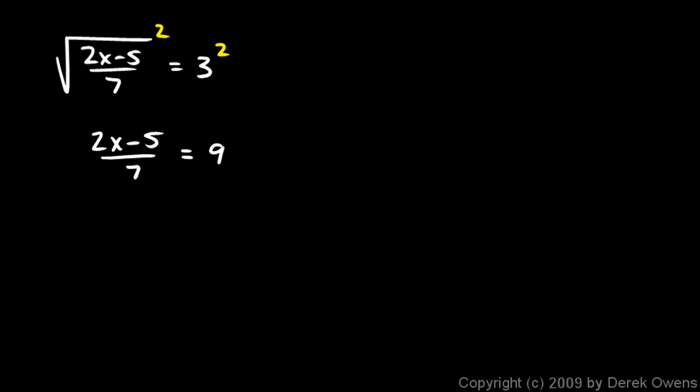And from here, it's pretty routine. Just multiply both sides by 7, and these 7's cancel. And that leaves us with 2x minus 5 equals 63. And then, add 5 to each side, and I get 2x equals 68. And then, divide both sides by 2, and I get x is 34. And that's the answer.